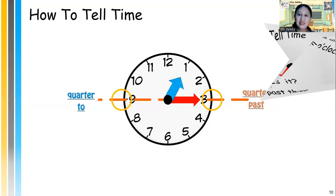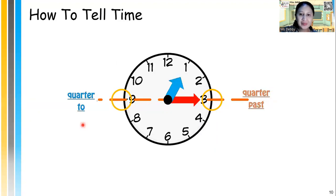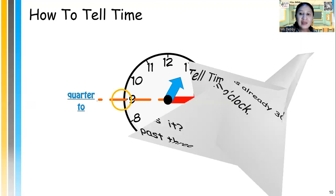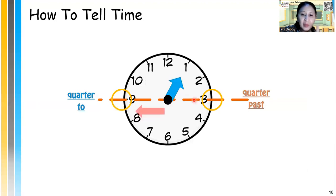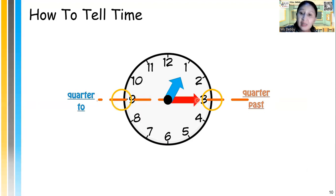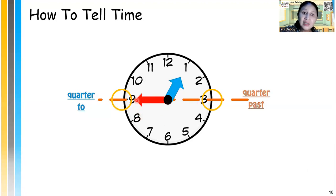Now, what if the long hand points at number 3? We can say it's quarter past. And if the long hand points at number 9, it's quarter to. One more time: if the long hand points at number 3, it's quarter past; and if the long hand points at number 9, it's quarter to. Quarter past means it's 15 minutes past.